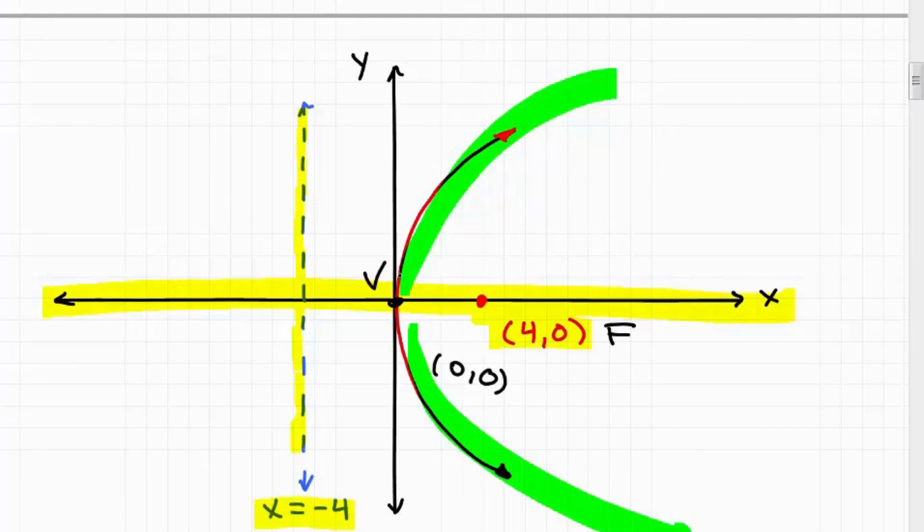The way we can get a more accurate sketch is we can just take and create a table value, x, y, and just get some points here. So this would be like, say, for example, 1. This would be 2. This would be 3.